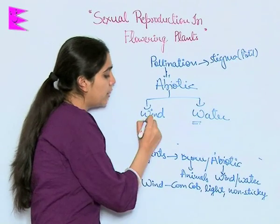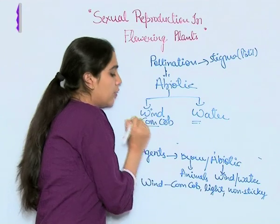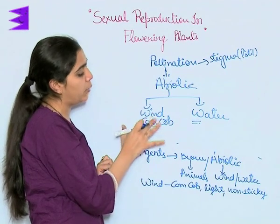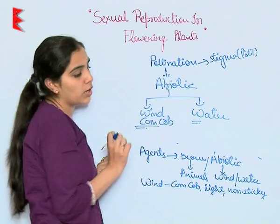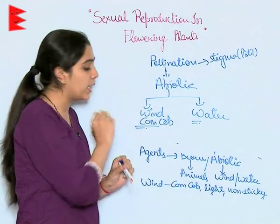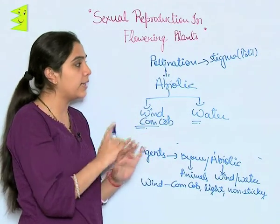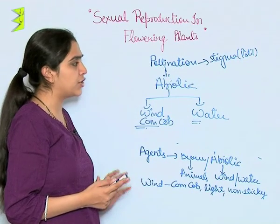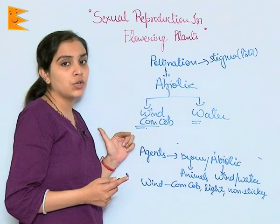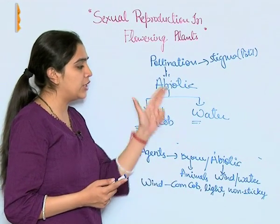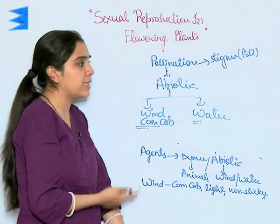Next is wind pollination. An example is corn cob. The only criterion for pollens to be transferred by wind is that they should be light and non-sticky, so that when the wind blows they can easily travel with it and pollination can occur. So the process of pollination involves three types — Autogamy, Geitonogamy, and Xenogamy — and the agents that lead to transfer are abiotic as well as biotic.